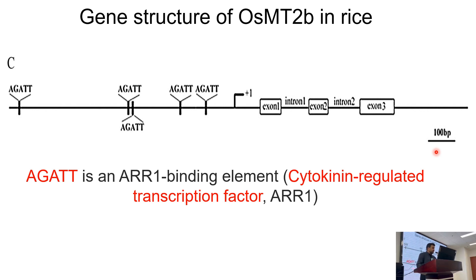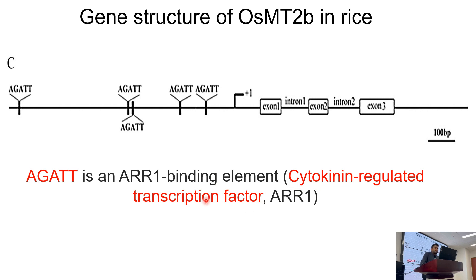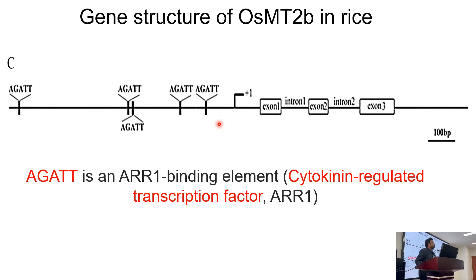If we talk about the gene structure of OSMT2B specifically, in the upstream of this gene there is an AGADD sequence box, which is actually an ARN-binding ion element coding for cytokinin-regulating transcription factors. Although this gene has many exons — exon 1, exon 2, exon 3 — if we look at the upstream of this gene we can see there are cytokinin-regulating transcription factors, suggesting this protein may have a function in cytokinin regulation, which we will see later.